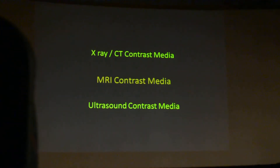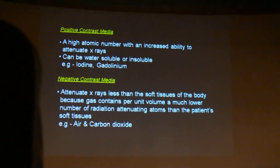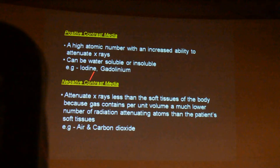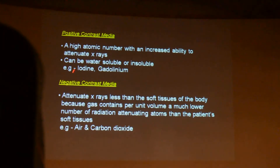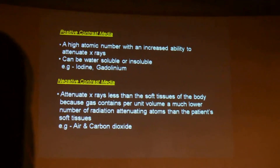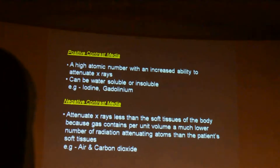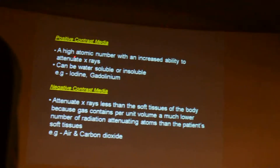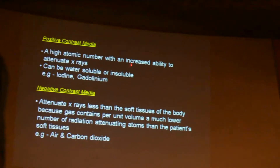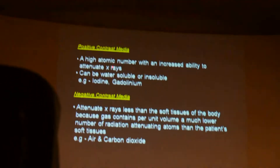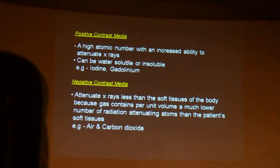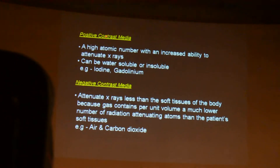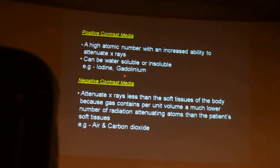We have basically two types of contrast. One is positive contrast, second is negative. Today we'll talk only about the positive contrast because that's what we use in a urinary system. In positive contrast, it has a high atomic number with increased ability to attenuate the x-rays, and they can be either soluble or insoluble. The examples for positive contrast media are iodine and gadolinium.